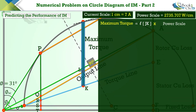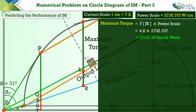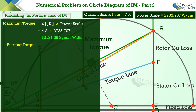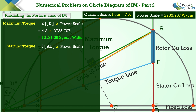To determine the maximum torque of this motor, multiply the length of line JK by the power scale value. The length of line JK is 4.8 centimeters and the power scale value is 2735.707 watts per centimeter. The maximum torque of this motor is 13,131.39 synchronous watts.